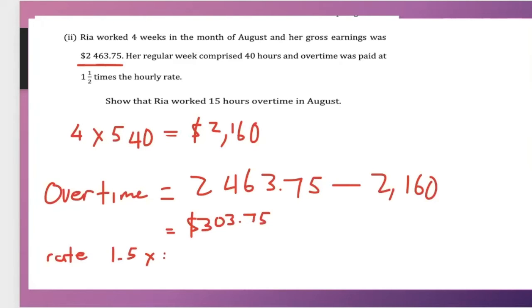So for overtime, Ria is being paid $20.25 when you multiply this.